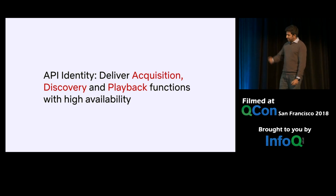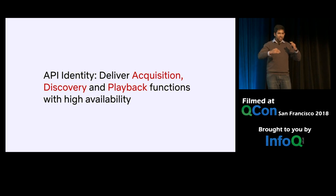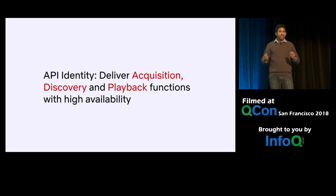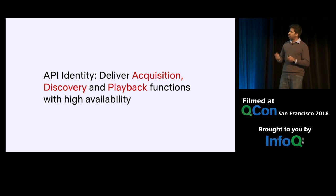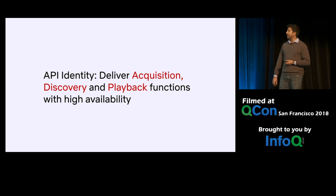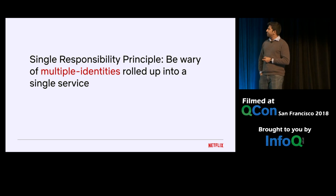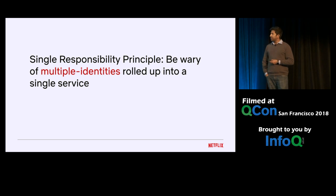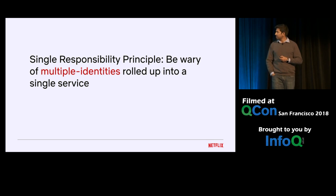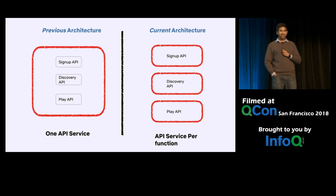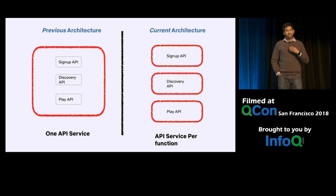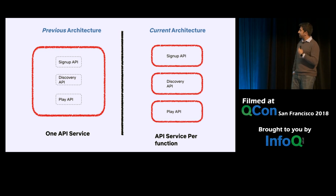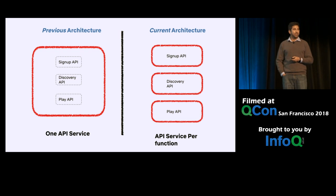As we went through this process of hierarchically determining the identity of our service with respect to our organization and other services, the first thing we questioned was: does it still make sense for one API service to play a role in all these major functions? In retrospect, we realized we didn't apply the single responsibility principle — we rolled multiple identities into one service, which made the API service unnecessarily complex. This enabled us to make our first decision: we split the API service into a signup API service, a discovery API service, and a playback API service.